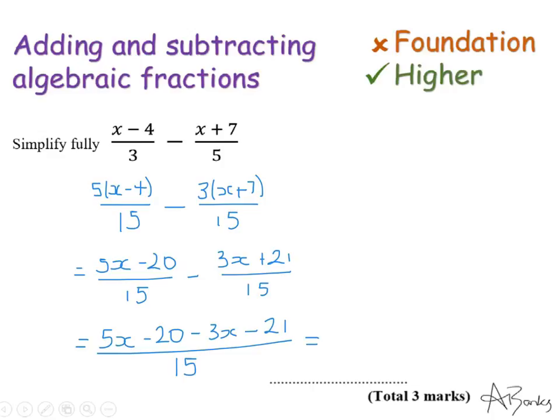Now to simplify my numerator, 5x minus 3x is 2x. And minus 20 minus 21 is minus 41. And that is all over 15. That won't simplify any further because there is no integer apart from 1 that divides 2, 41, and 15. That's my final answer.